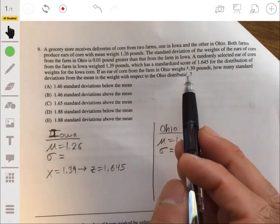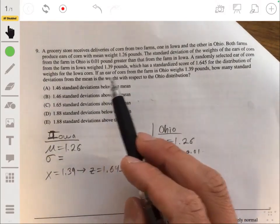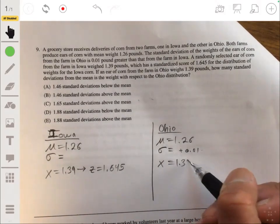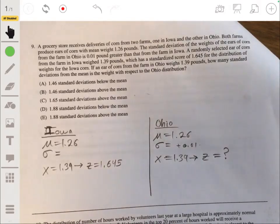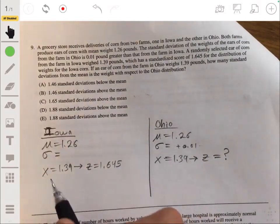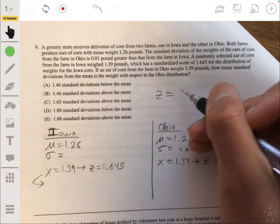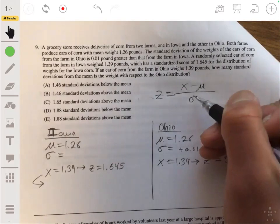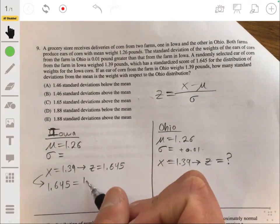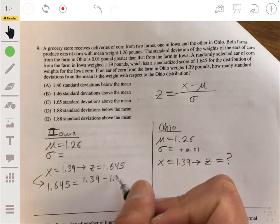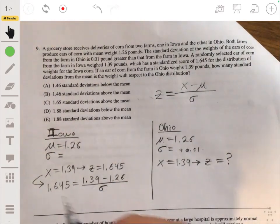And for that, we're going to look at the fact that we're given an individual value X. We have a randomly selected ear of corn that weighed 1.39 pounds and had a Z score or standardized score of 1.645. So we want to find the Z score for an ear of corn in the Ohio distribution that weighed the same, that also weighed 1.39 pounds. So we need to solve for Z here. This is our goal. Let's find the standard deviation of the Iowa distribution. The standardized score of a distribution is equal to the observed value minus the mean over the standard deviation. So here, the Z score is 1.645. Our observed X value is 1.39. Our mean is 1.26 over the standard deviation.